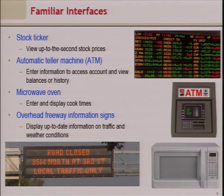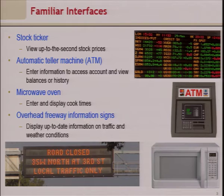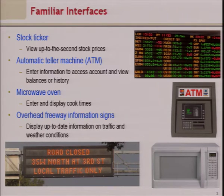ATM machines have push buttons and touch screens plus a display through which you interact with the cash delivery system. Household appliances like microwave ovens have keypads and 7-segment displays through which you can see time remaining and set temperature and other parameters. Road signs are also a user interface, though static displays cannot have their information changed.